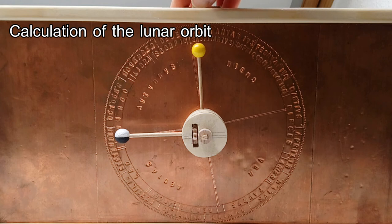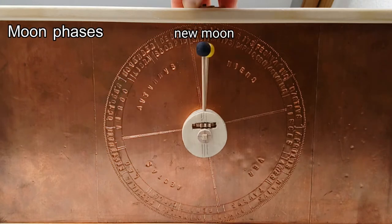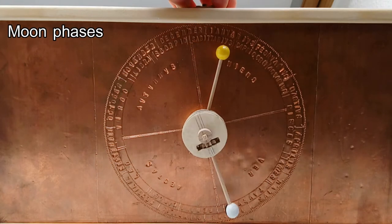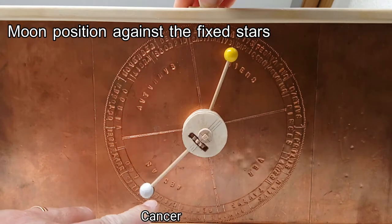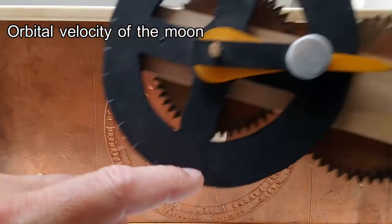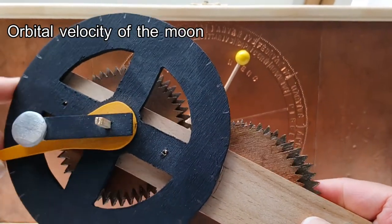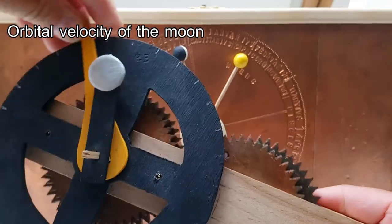In this video I'd like to show the calculation of the lunar orbit around the Earth in the Antikythera mechanism. This includes the moon phases, the calculation of the moon position against the fixed stars, and finally its differing speeds in the anomalistic months. Close to Earth the moon moves faster and remote from Earth the moon has a slower pace.